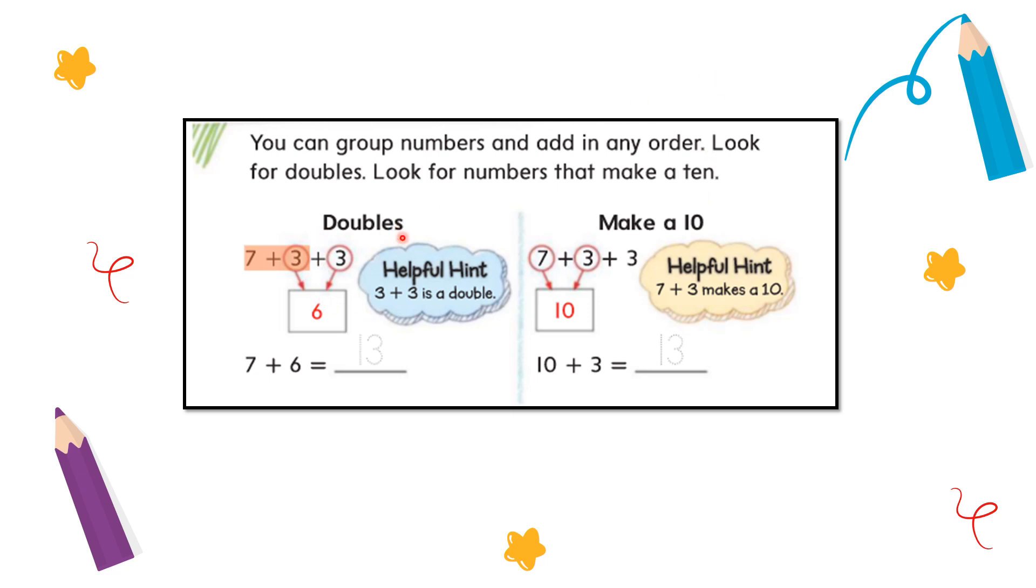That means we have two numbers that are the same in the addition here. So we have 7 plus 3 plus 6. First, let's use the doubles, so we will add 3 plus 3, which gives me 6. Then what's remaining here? 7. So we're going to add 7 plus...